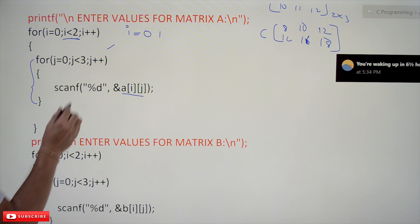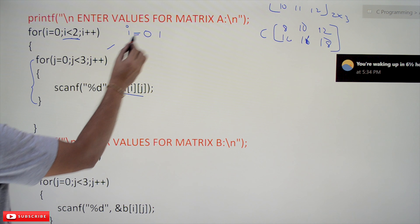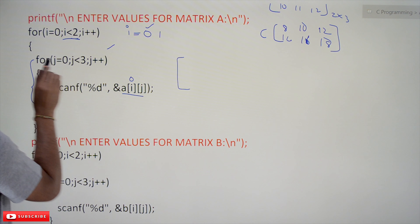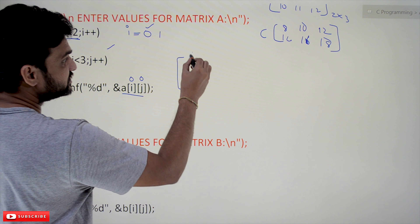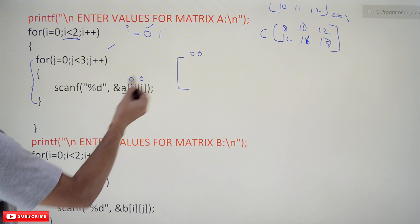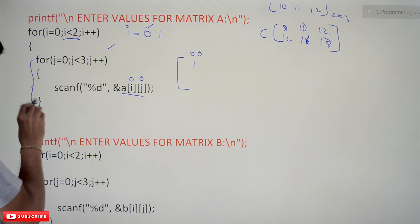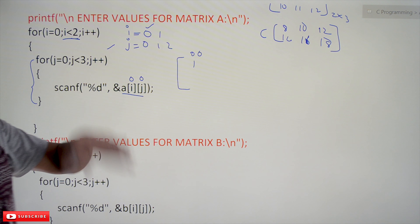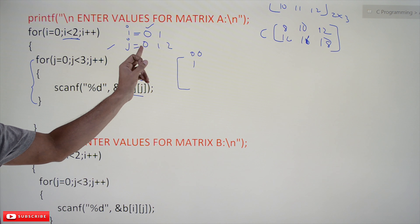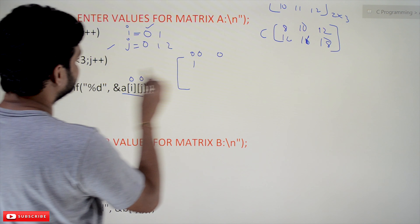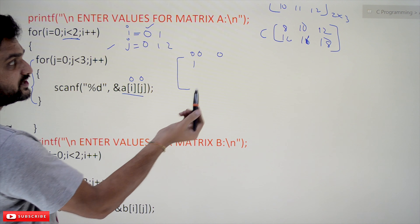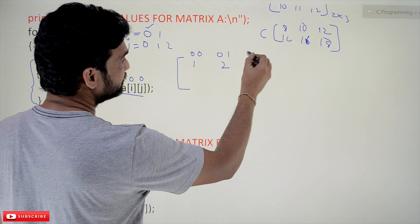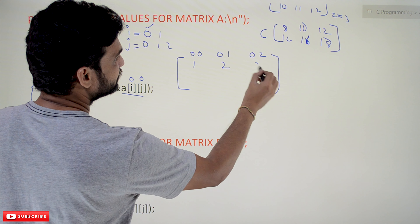In the first iteration of the outer loop, i equals 0. In the first iteration of the inner for loop, j equals 0, so A[0][0] is scanned. Assume the user enters 1. The inner loop iterates for j = 0, 1, 2. In the next iteration, i is still 0 and j equals 1, so A[0][1] is scanned.